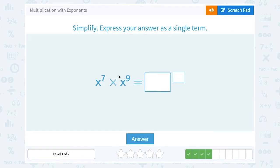x to the 7th times x to the 9th. Same reasoning here, if we multiplied x 7 times and then we multiplied x out 9 more times, altogether we would have x multiplied out 7 plus 9 or 16 times.